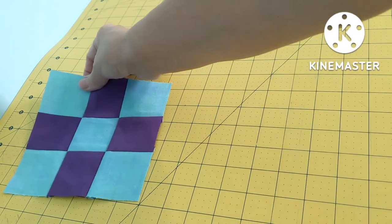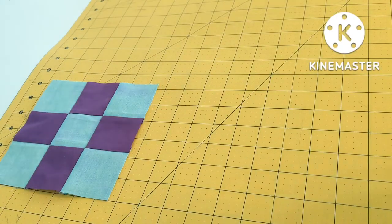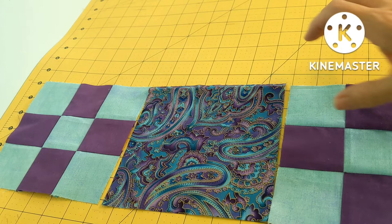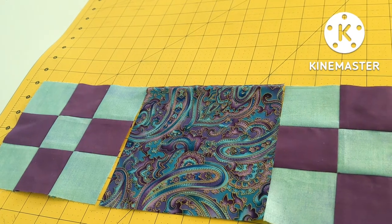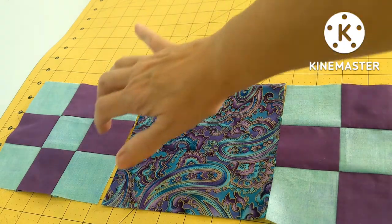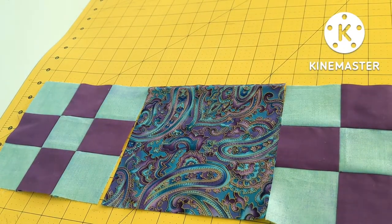As you sew your rows together you're just alternating the nine patch with the solid. And your rows can be as long as you want them to be. You just have to make sure that you have an odd number so that you start and end with the nine patch.